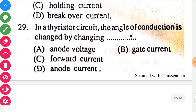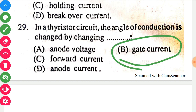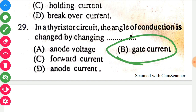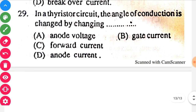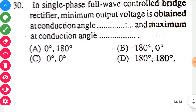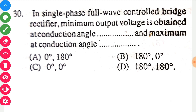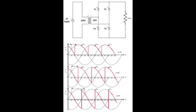In a thyristor circuit the angle of conduction is changed by changing — option B is correct: gate current, because in a thyristor the gate current is the controller — it is the pulse that controls the output. In a single phase full-wave controlled bridge rectifier, minimum output voltage is obtained at conduction angle 0 and maximum at conduction angle 180, so option A is correct.